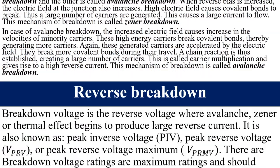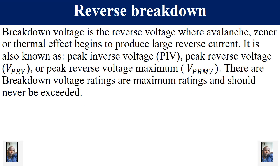Reverse breakdown voltage is the reverse voltage where avalanche or Zener breakdown effects begin to produce large reverse current. It is also known as peak inverse voltage (PIV), peak reverse voltage (PRV), or peak reverse maximum voltage (PRMV). These are maximum voltages and should not be exceeded.